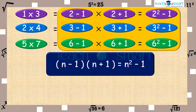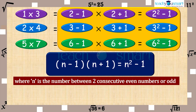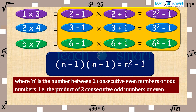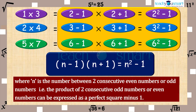Thus, we can generalize: (n minus 1) multiplied by (n plus 1) equals n square minus 1, where n is the number between 2 consecutive even or odd numbers. That is, the product of 2 consecutive odd numbers or even numbers can be expressed as a perfect square minus 1.